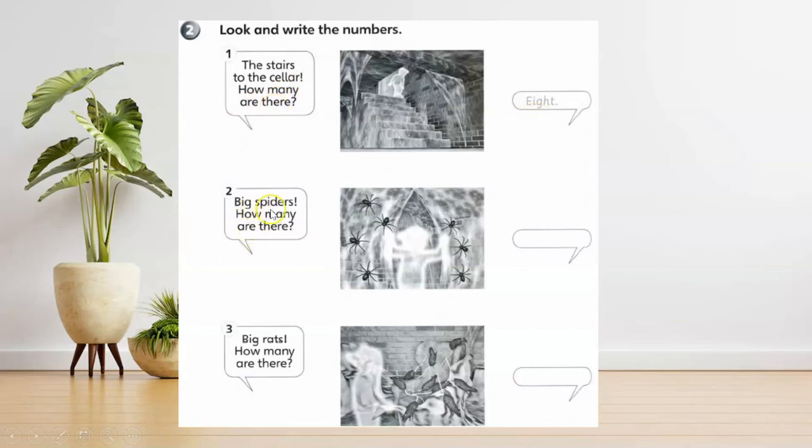Big spiders, how many are there? 1, 2, 3, 4, 5, 6, 7.